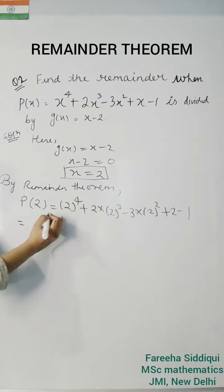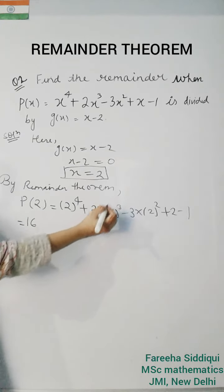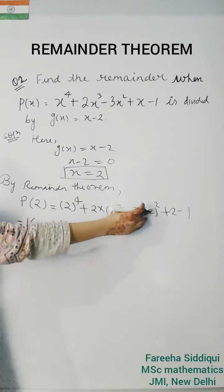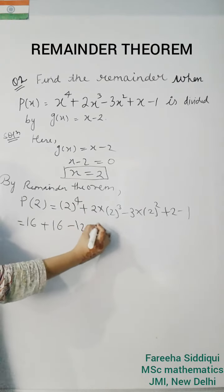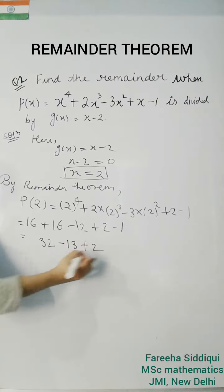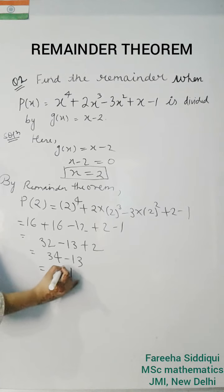So that is equals to 2 to the power 4, it will be 16. 2 cube into 4 plus 16 minus 12 plus 2 minus 1. 32 minus 13 plus 2, so it will be 34 minus 13. It is further equal to 21.